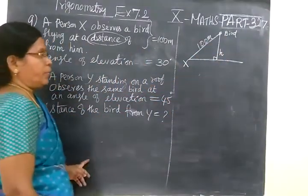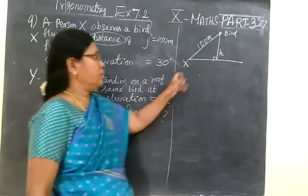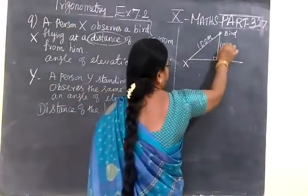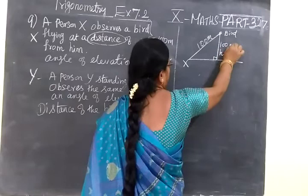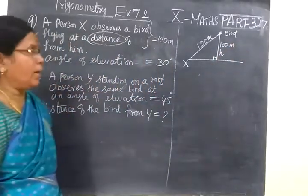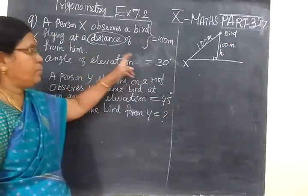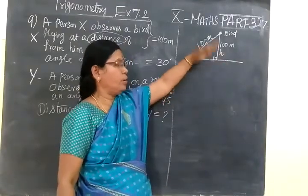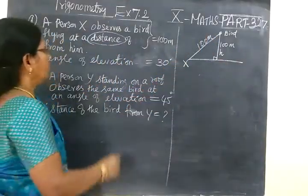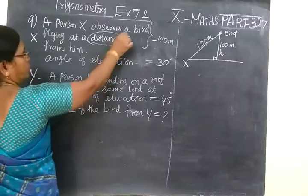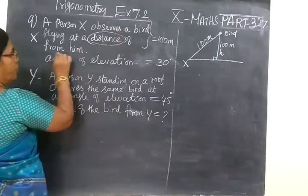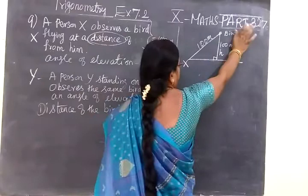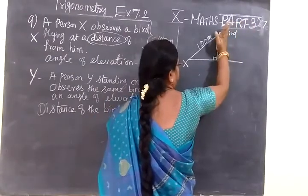Students find difficulty here — they immediately write 100 as the height. But you must know the difference between height and distance. Height means the perpendicular height above ground level, but here it is given as the distance of the bird from him. So writing 100 as height is wrong.